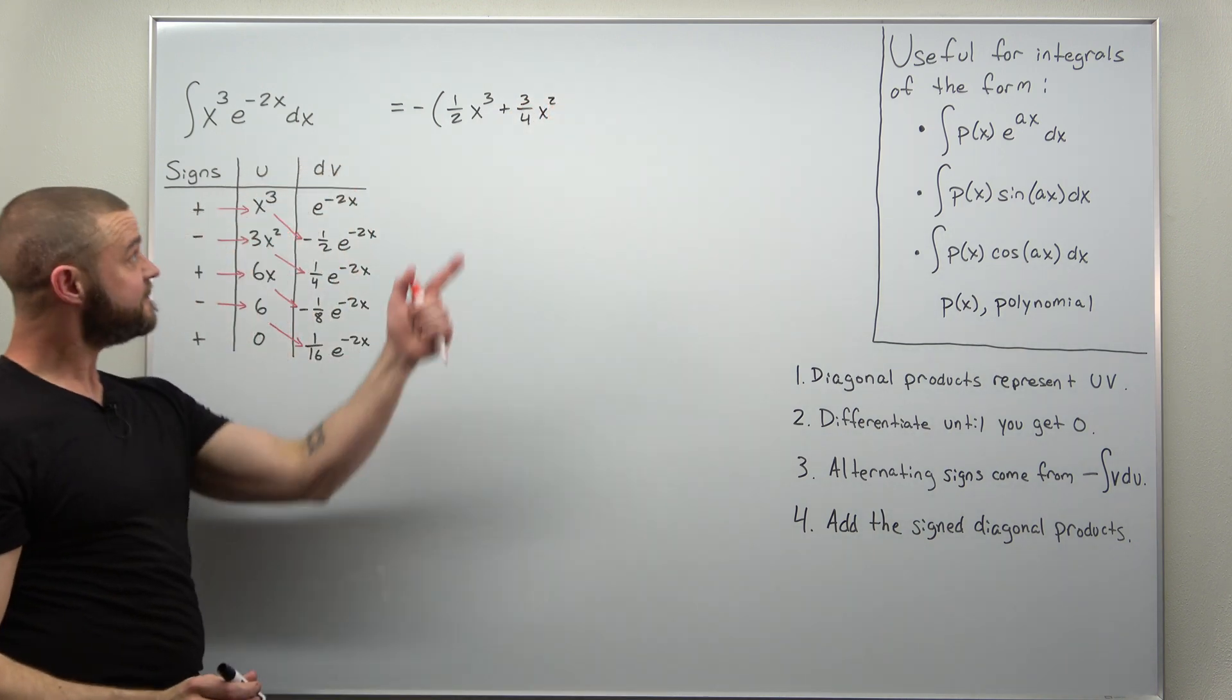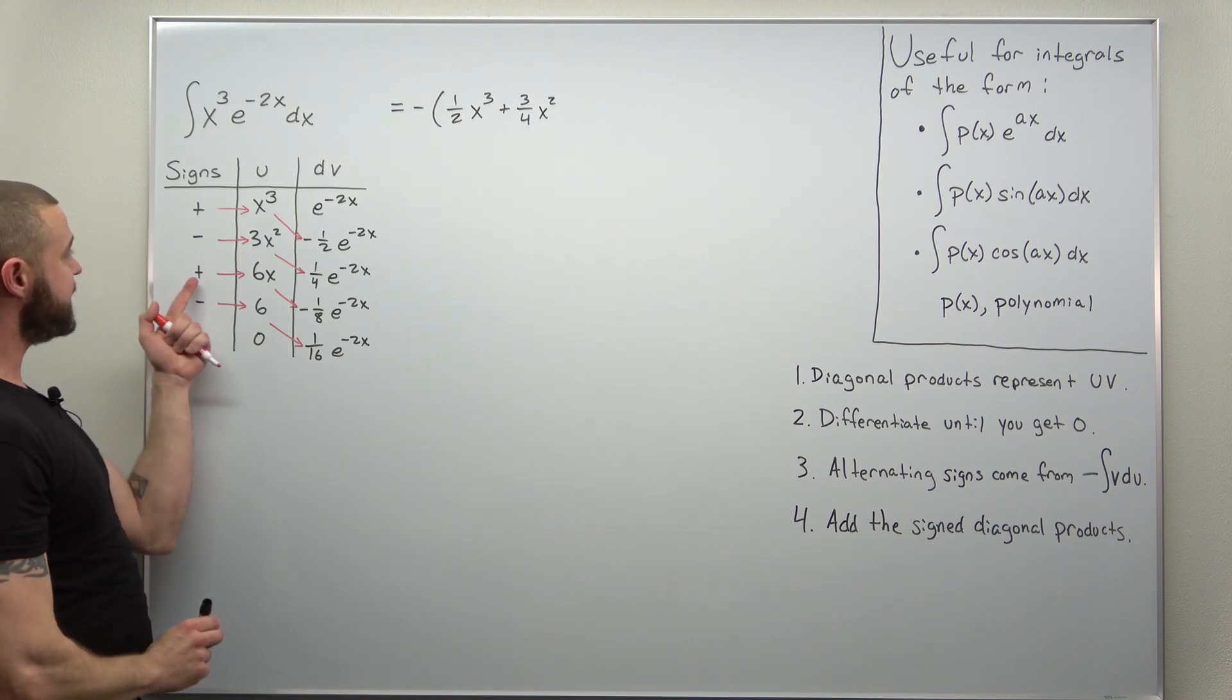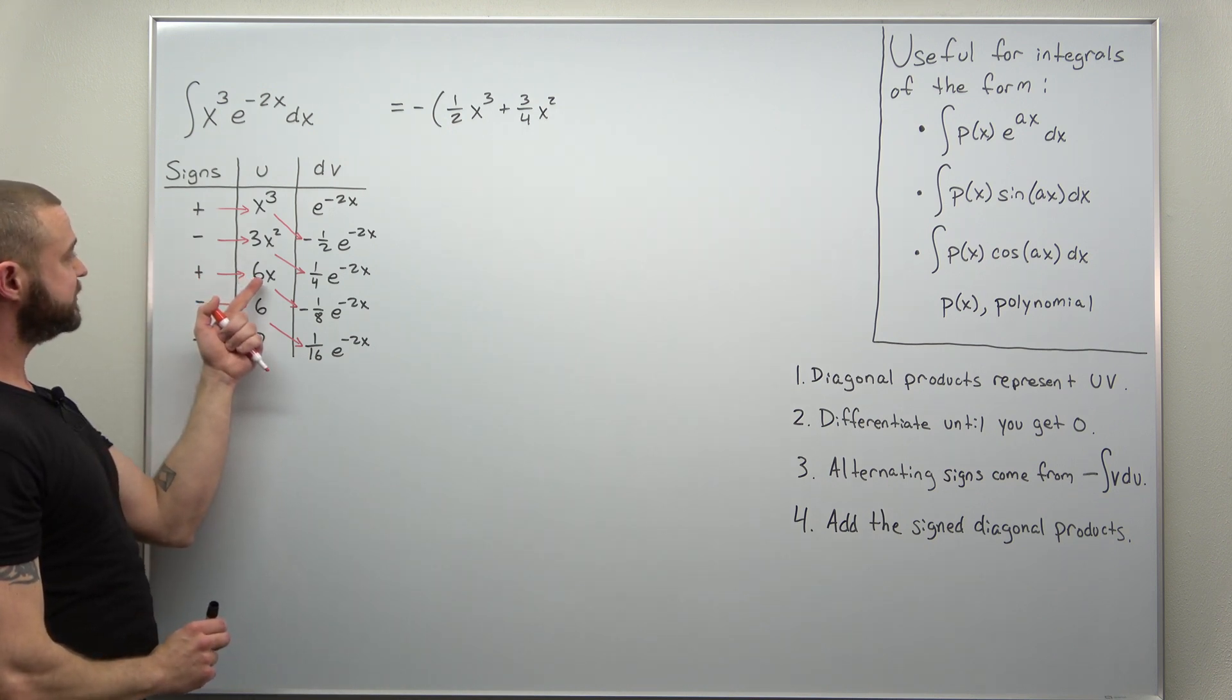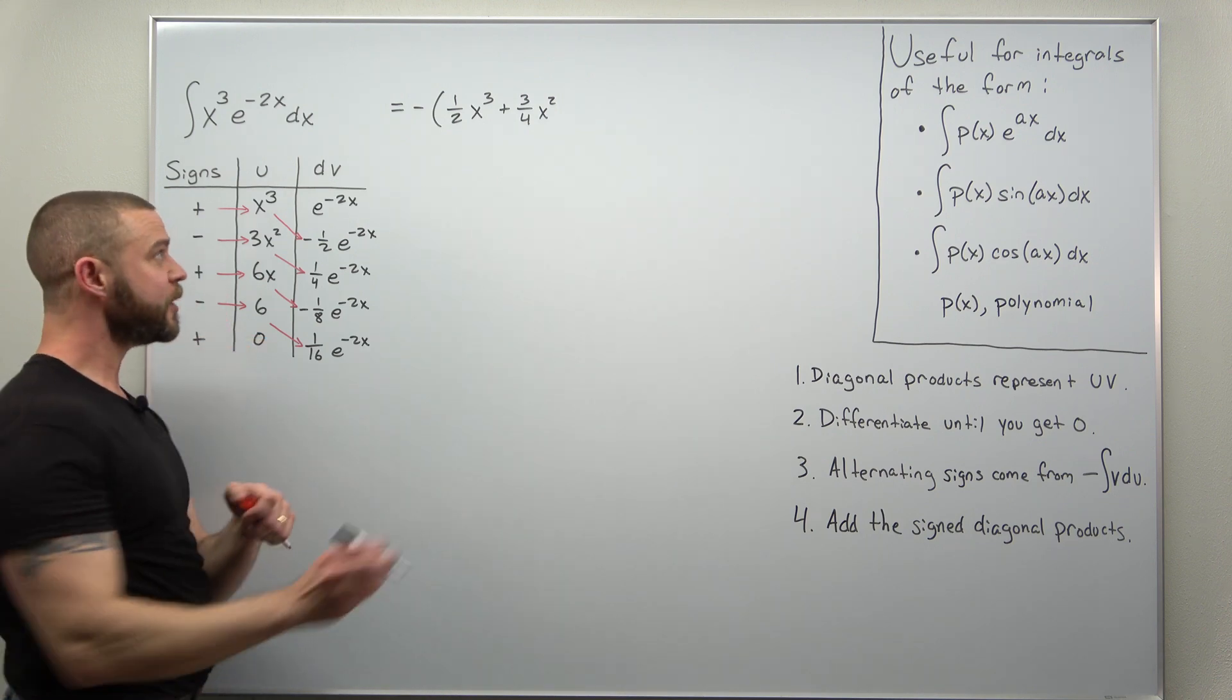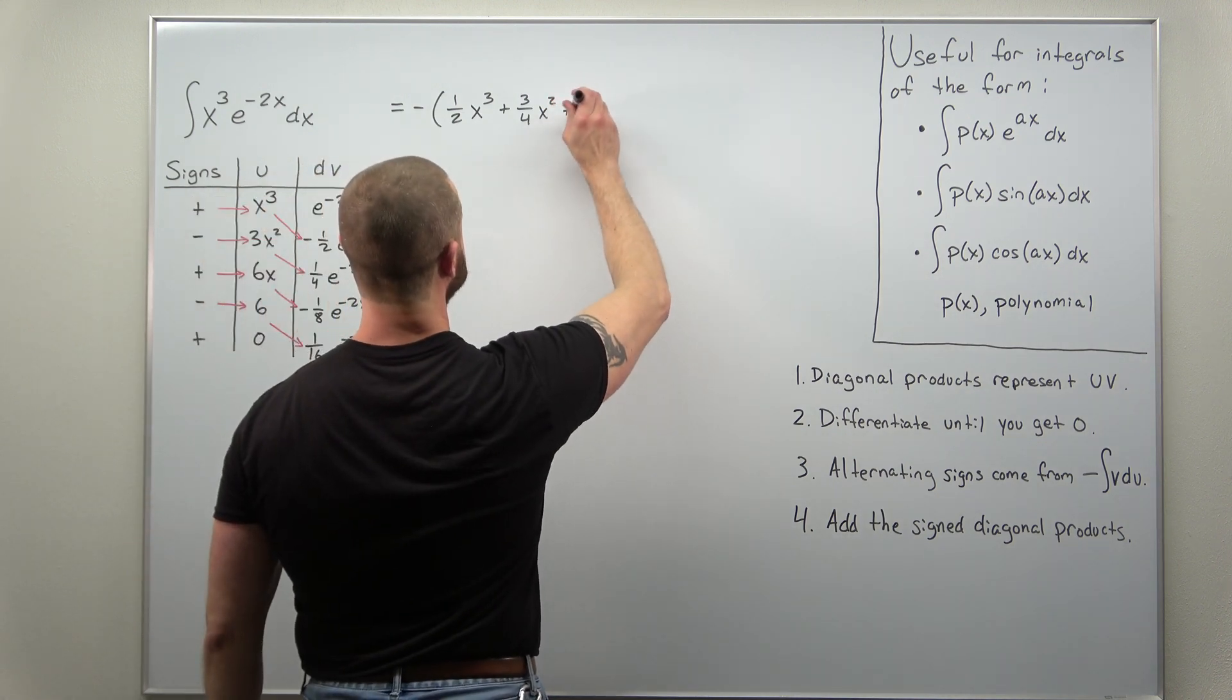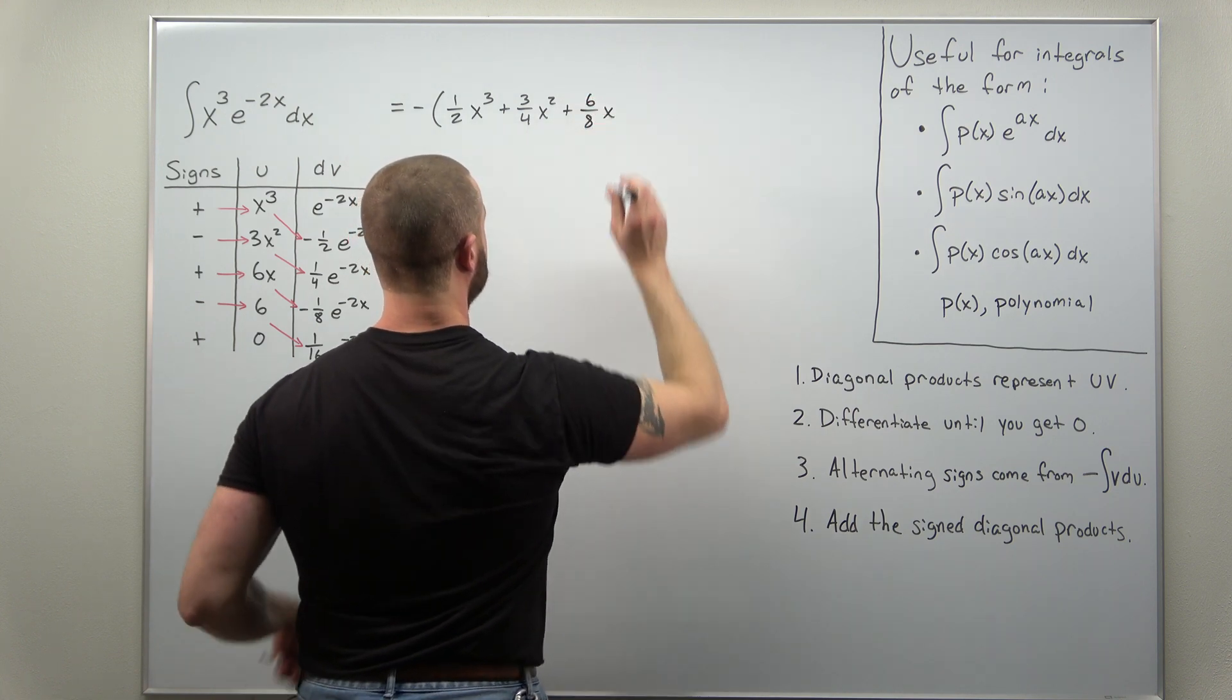And again we factored out the negative, so we don't need to include that inside the parentheses. Next one looks like we're going to get 6x times 1 over 8. Simplify all your fractions at the end. So write that as plus 6 over 8 times x.